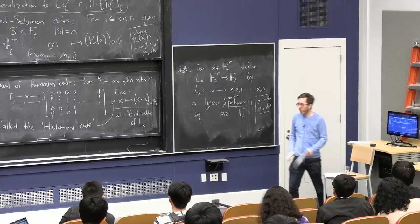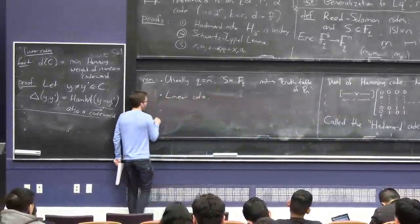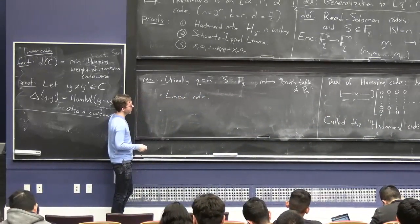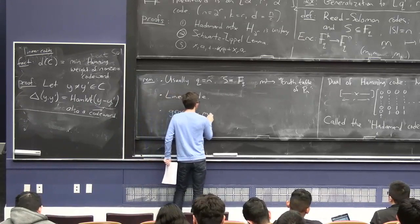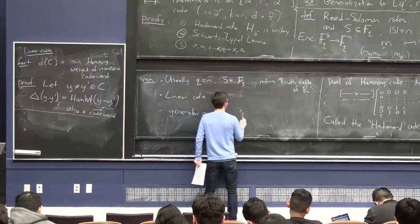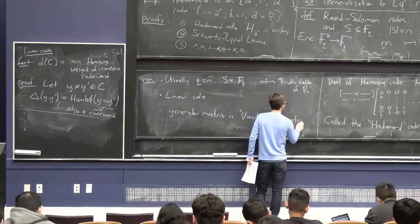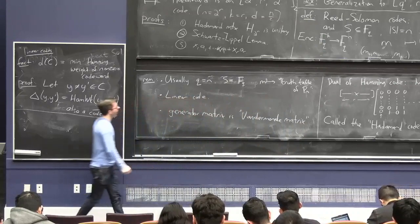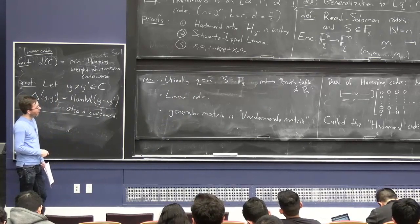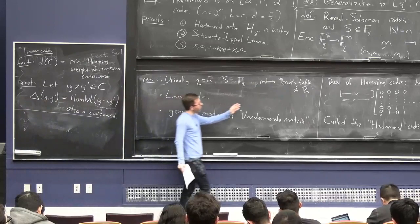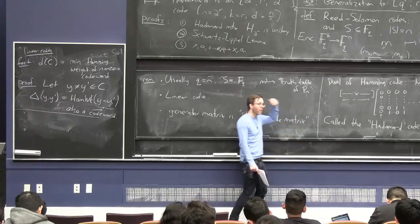You can write down a generator matrix. Another way to see it is that to be a linear code, the sum of two codewords should also be a codeword. And that's true, because the vector sum of two truth tables is also the truth table of the sum of the polynomials. If you have two messages M and M prime, then Pm plus Pm prime as polynomials is the same as Pm plus Pm prime. So the truth tables add when you add two polynomials or add two sets of coefficients.